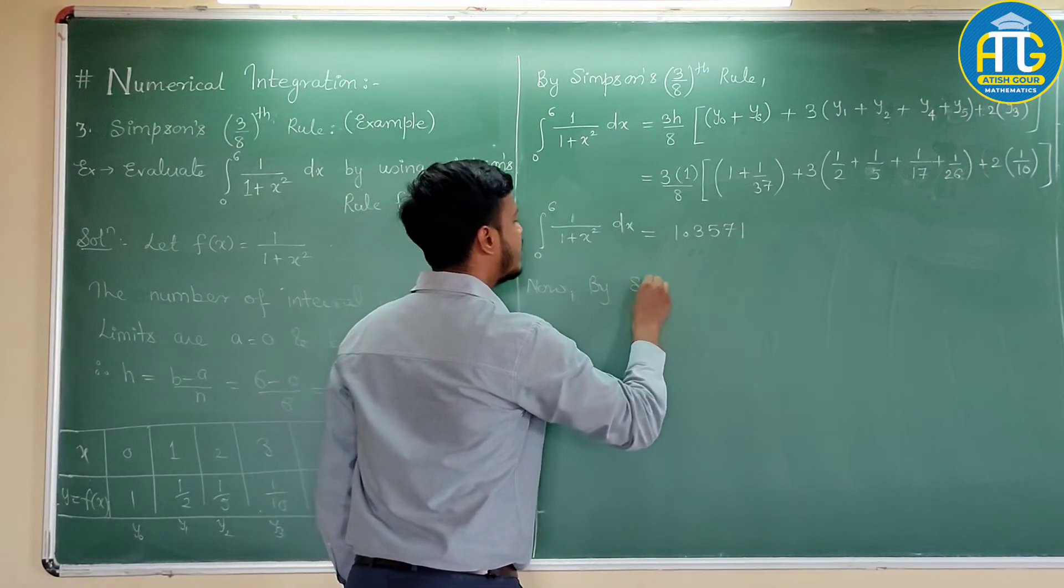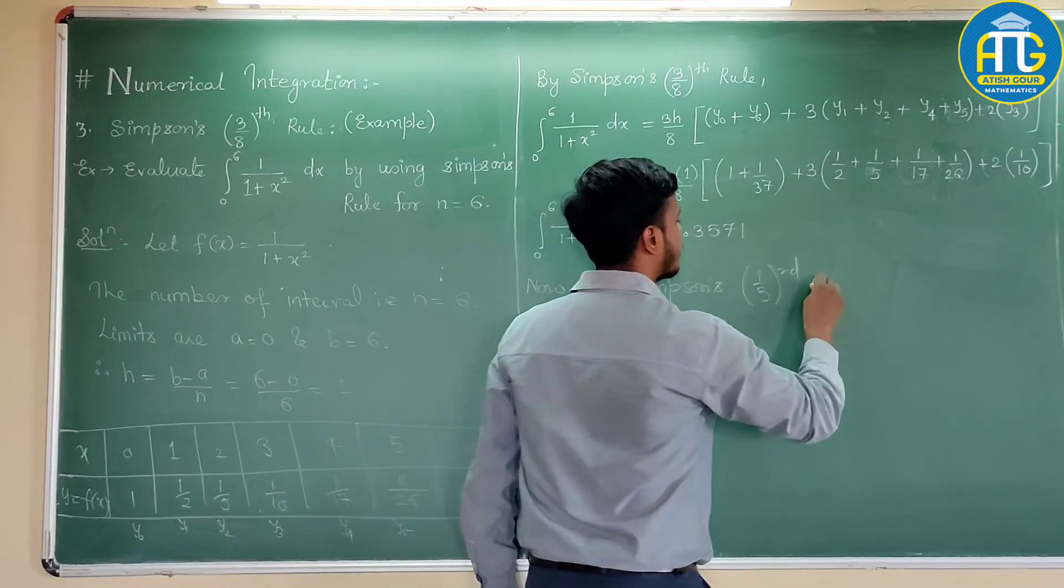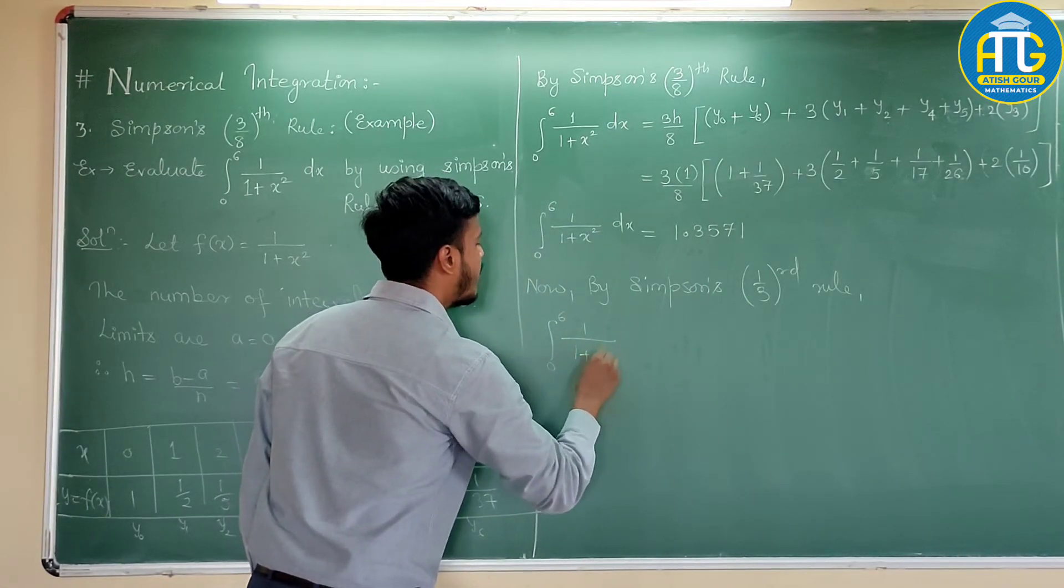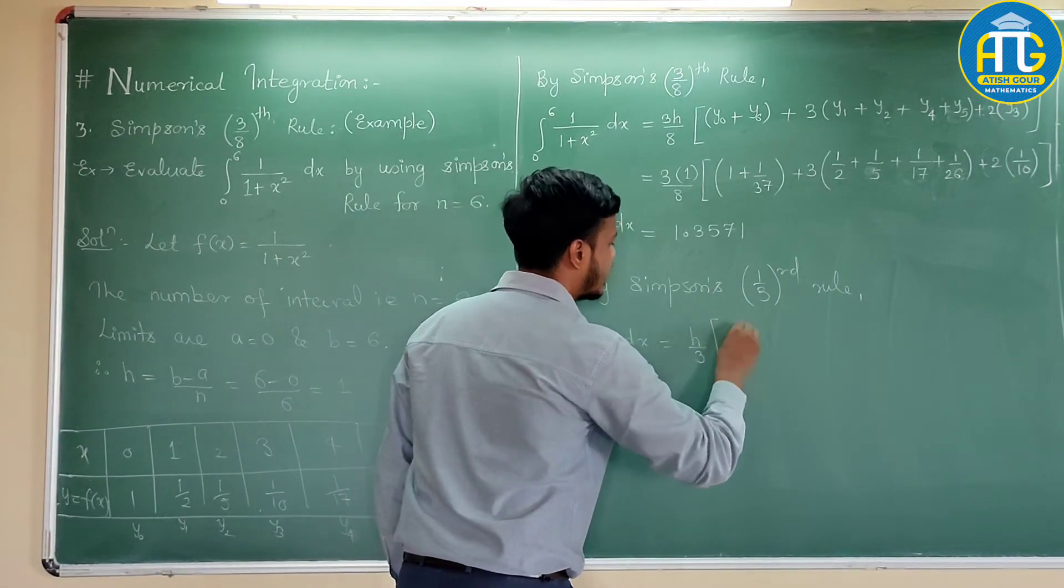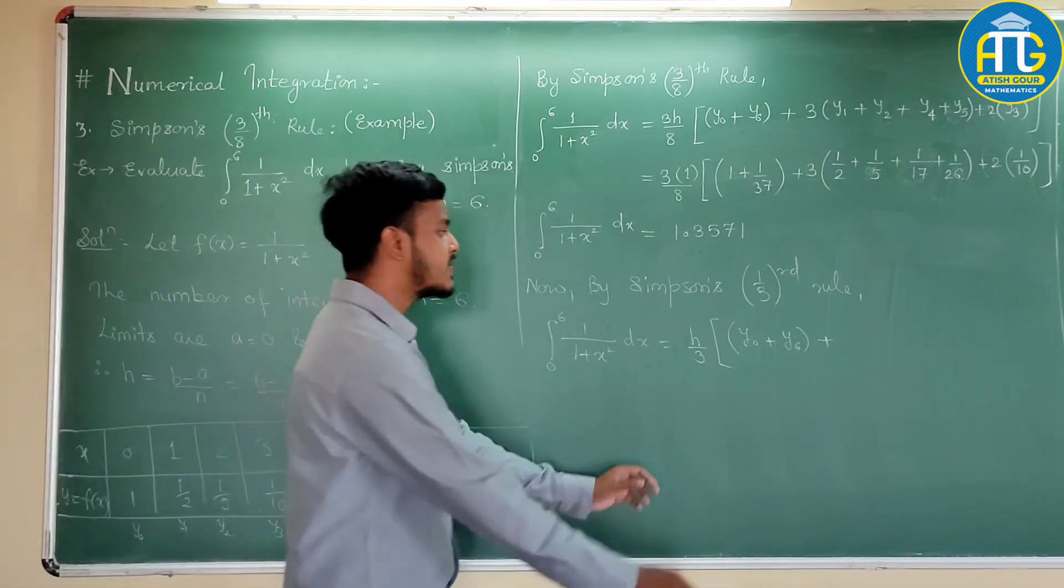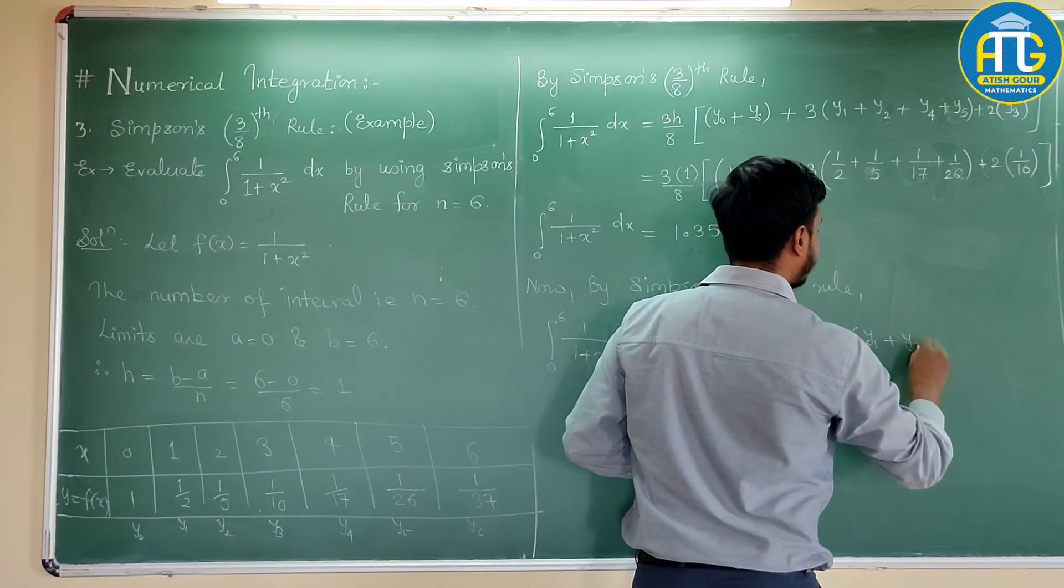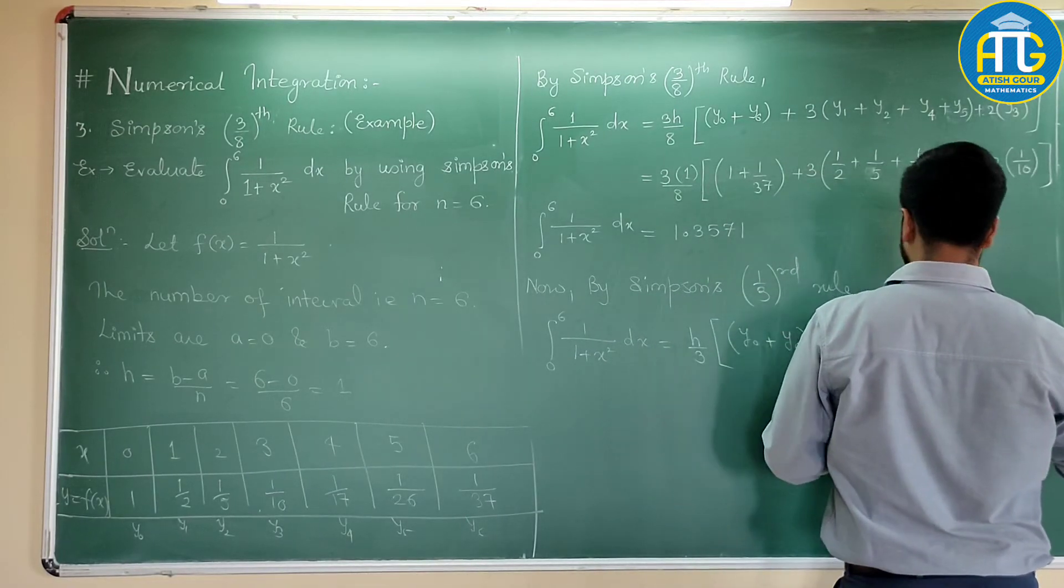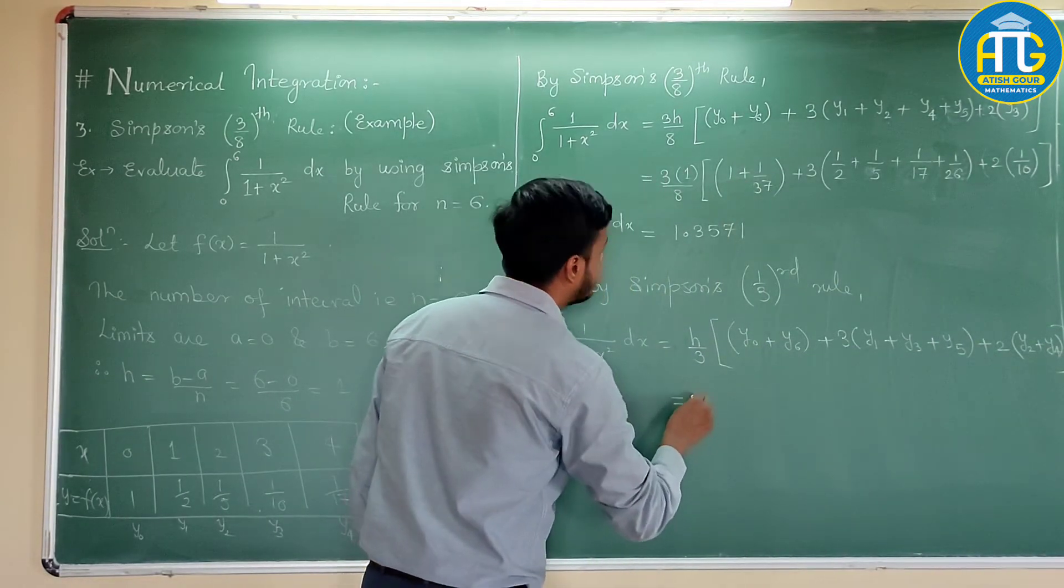Now, by Simpson's one third rule, we can solve integration from 0 to 6, 1 upon 1 plus x squared dx equals h by 3. Then there would be y0 plus y6 plus 4 times odd multiple of y. That is y1, y3, y5 plus 2 times even multiple of y suffixes. So, this is y2 plus y4. Now, you have these values. H is 1.